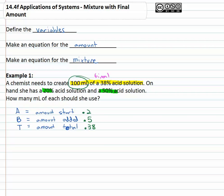We're also told that the hundred milliliters is the total amount. So we don't need a variable for the final amount. We know what it is, so we're going to use a hundred. We don't even need the T.